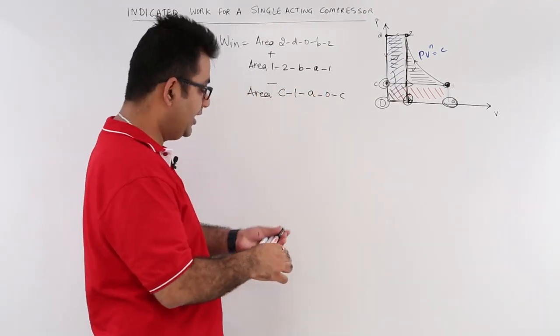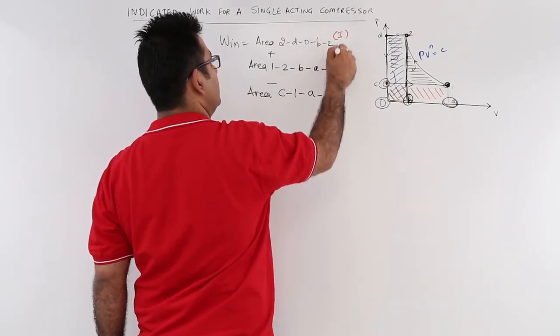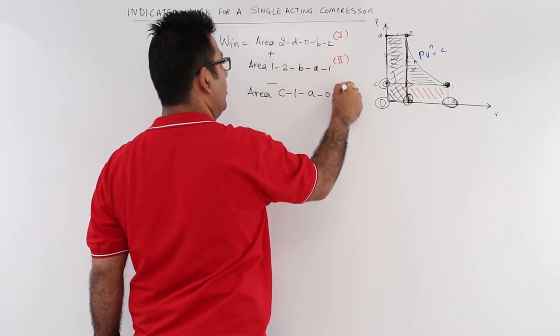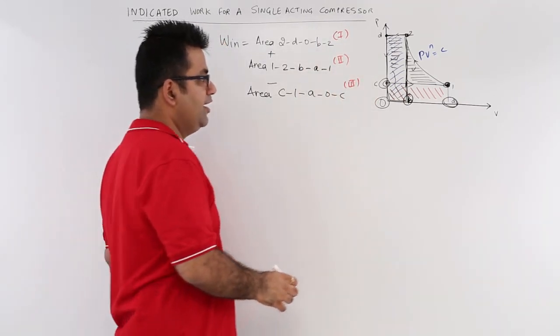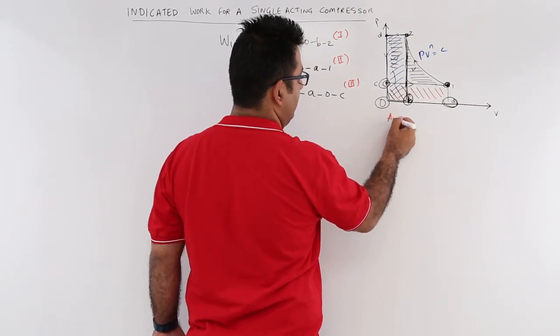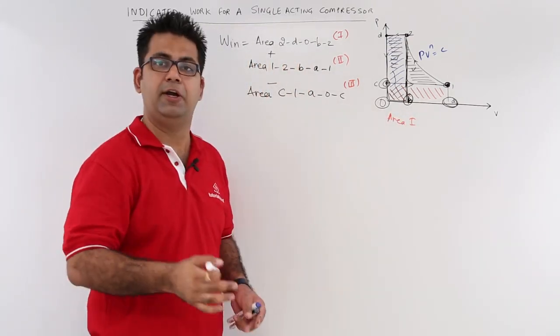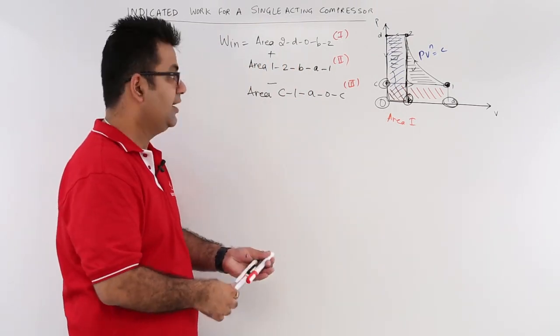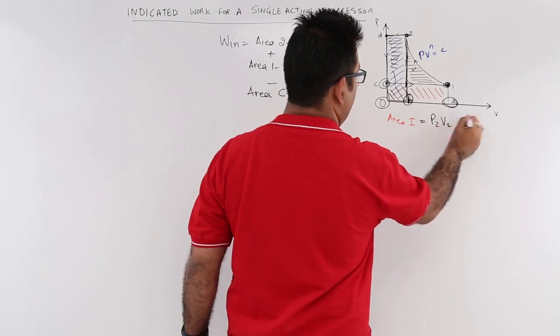So let me designate these areas as area 1, area 2, and area 3. So area 1, let us talk about area 1. Area 1 is the flow work during the discharge stroke and that flow work is nothing but P2V2.